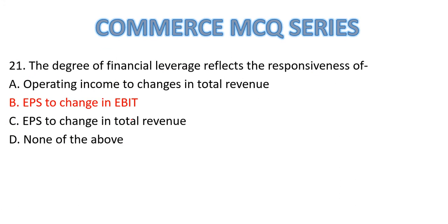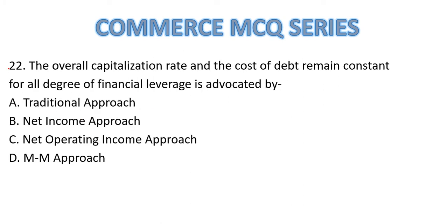The answer is Option B — EPS (Earnings Per Share) divided by EBIT (Earnings Before Interest and Tax). Now Question Number 22: The overall capitalization rate and the cost of debt remain constant for all degrees of financial leverage. This is advocated by which approach?